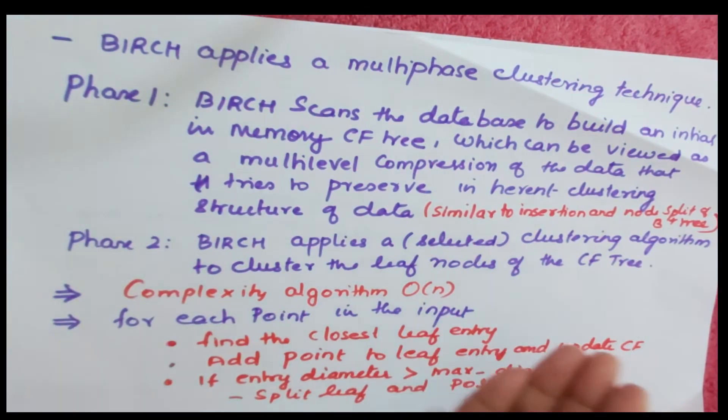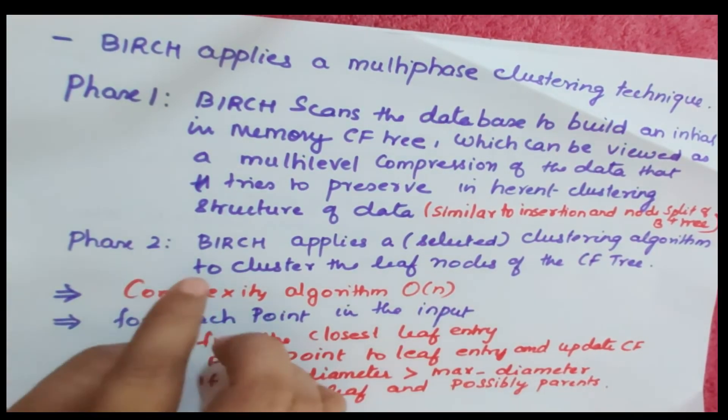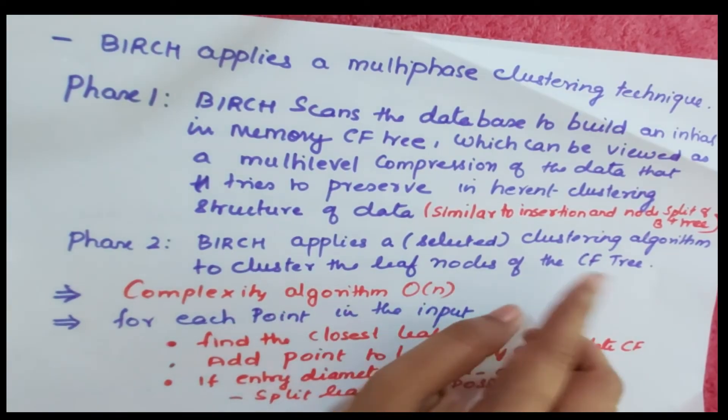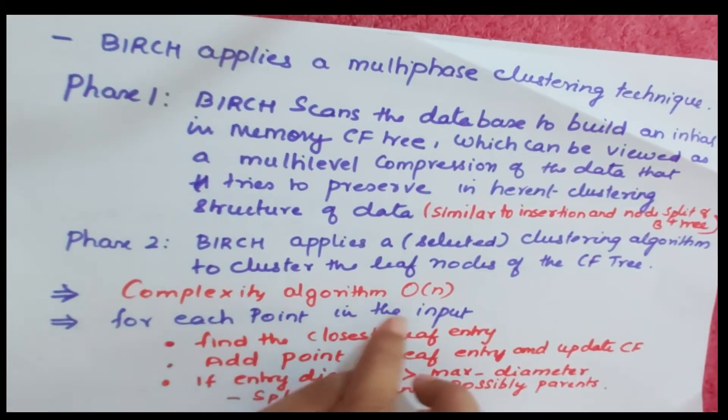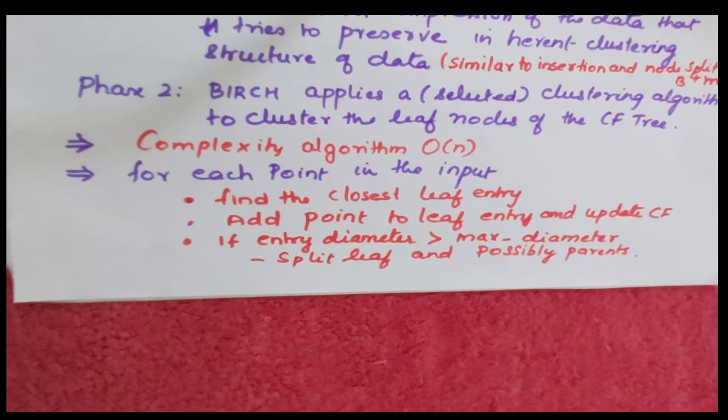It's like a B-tree insertion and node splitting method. BIRCH applies a selected clustering algorithm to cluster the leaf nodes of the CF tree, and the complexity of the algorithm is O(n).